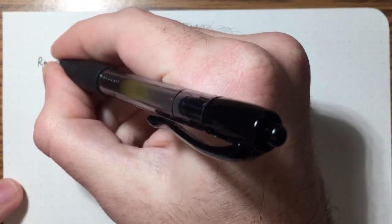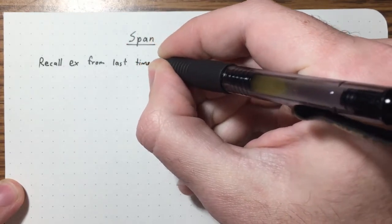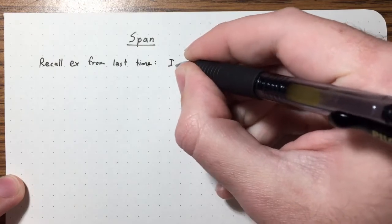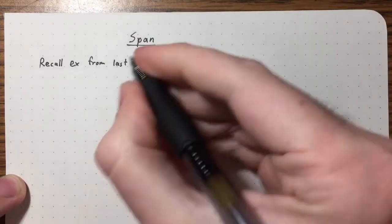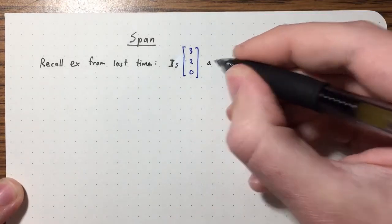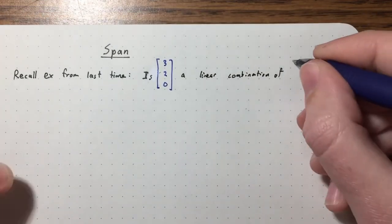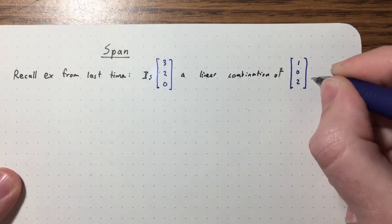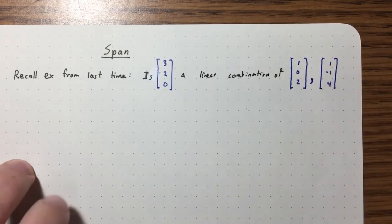In this lecture we're going to introduce what I think is a really interesting concept — it's called span. First I'd like to recall an example from the previous lecture. Here's a problem we did: is the vector (3, 2, 0) a linear combination of the vectors (1, 0, 2) and (1, -1, 4)?